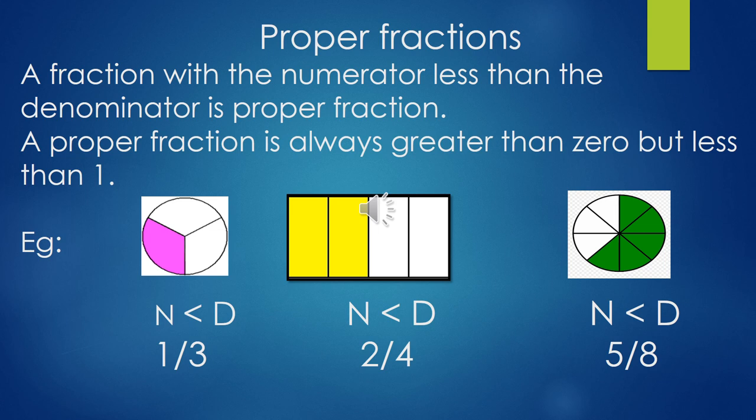Proper fractions: a fraction with the numerator less than the denominator is a proper fraction. A proper fraction is always greater than zero but less than one. Example: in the first figure, one shaded part out of three — numerator is less than denominator.